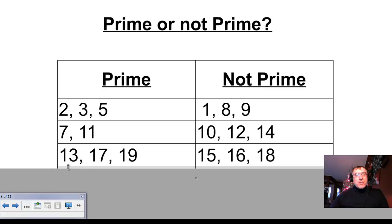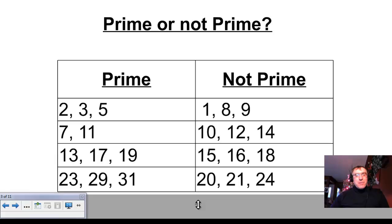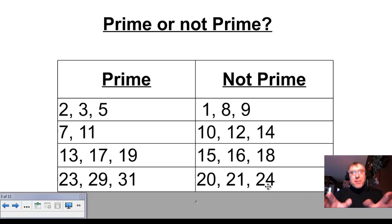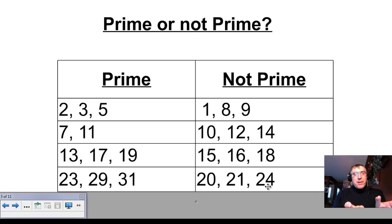Let's look at a couple more. 13, 17, and 19 are all prime numbers. 15, 16, and 18 are not prime numbers. And last but not least, 23, 29, and 31 are all prime. 20, 21, and 24 are not prime. So I want you to think about it — stop the video and think about what makes the left side prime and what makes it not prime.